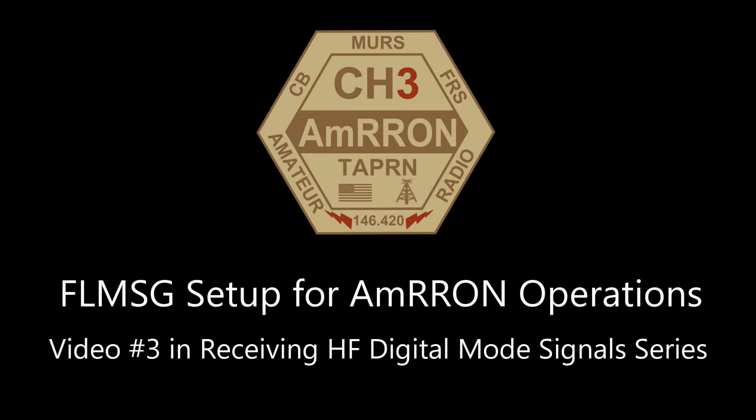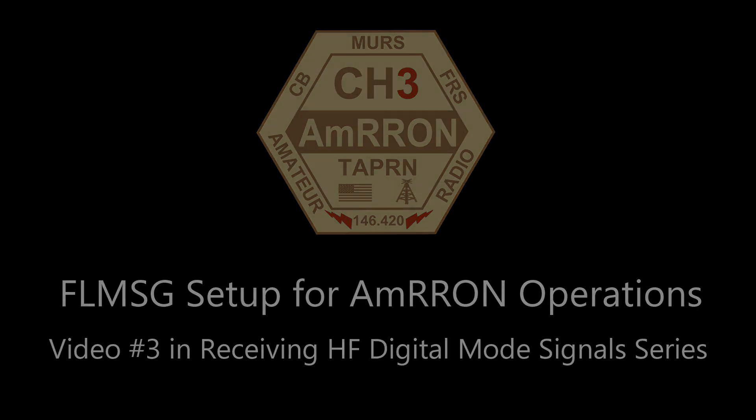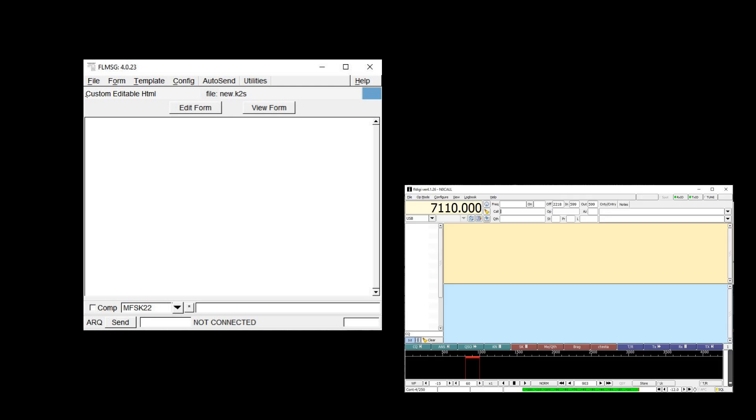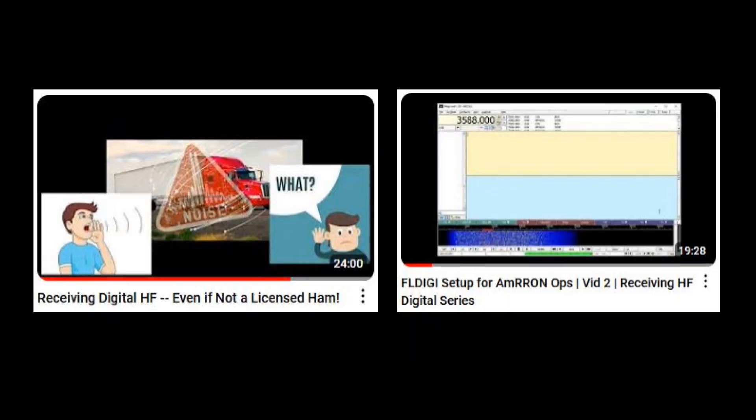Welcome to video 3 in the series titled 'Receiving HF Digital Signals.' This video covers FL Message setup for Amron ops. In this video we'll walk you through setting up FL Message, the Fast Light companion program which works with FL Digi. If you haven't done so already, be sure to go back and watch the first and second videos: 'Receiving HF Digital Signals' even if you're not a ham operator, and 'FL Digi Setup for Amron Operations.'